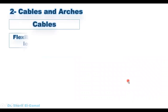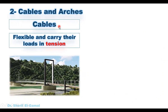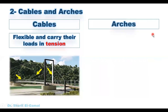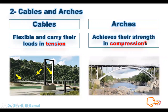The second famous type of structures are cables and arches. Cables are flexible and carry their loads in tension, as seen in a suspended bridge where cables support the whole bridge. On the opposite of cables, there are arches. Arches achieve their strength in compression. The loads on the road are transferred to the arch, resulting in compression forces in the arch, which then transfers them to the foundation.